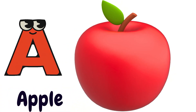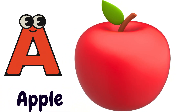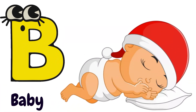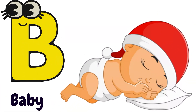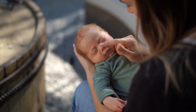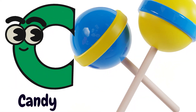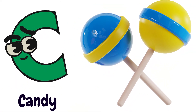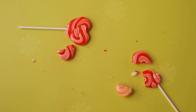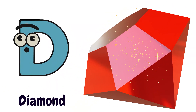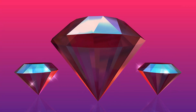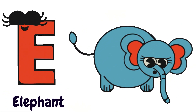A is for Apple. Apple. B is for Baby. B, B, B, B, Baby. C is for Candy. K, K, K, K, Candy. D is for Diamond. D, D, D, D, Diamond.